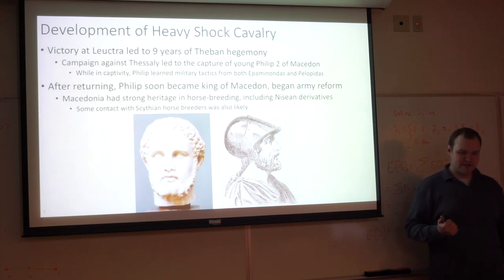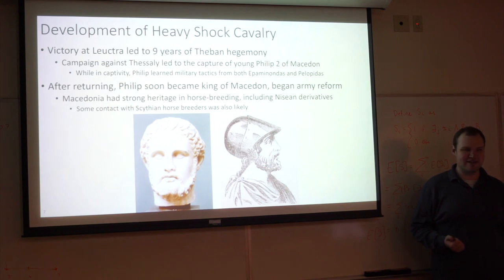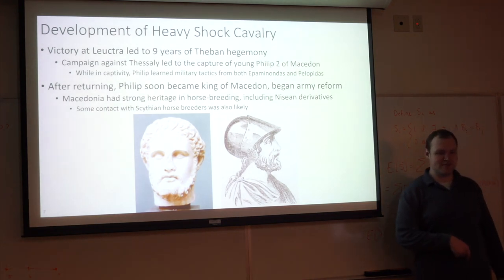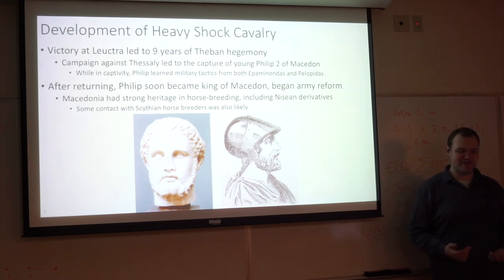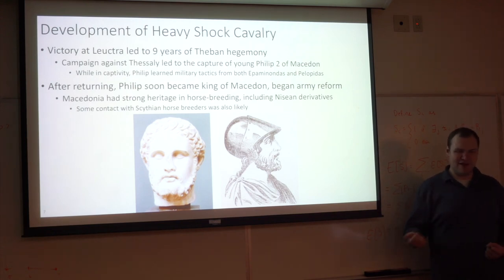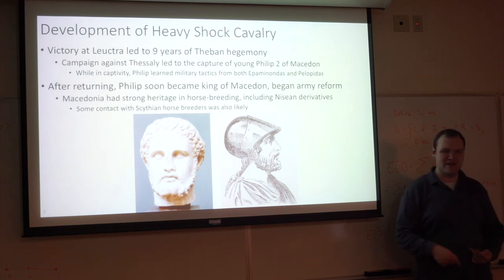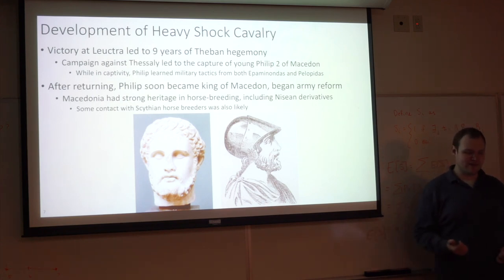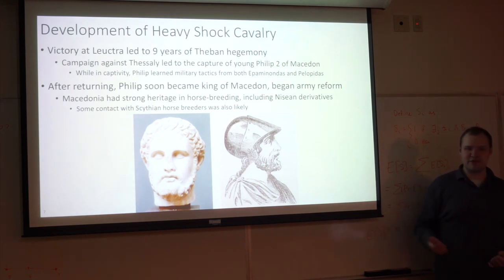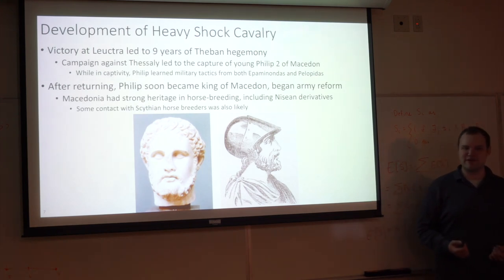The victory at Leuctra led to nine years of Thebes dominating pretty much all of Greece. They campaigned against Thessaly and captured the young Philip II of Macedon, who, while in captivity — technically a prince — was basically learning military strategy under both Epaminondas and another Theban general called Pelopidas. After returning, Philip became king of Macedon and began fairly strong army reforms, primarily based on what he saw at Thebes. Macedonia had a strong heritage in horse breeding, and there was also some contact with Scythian horse breeders.